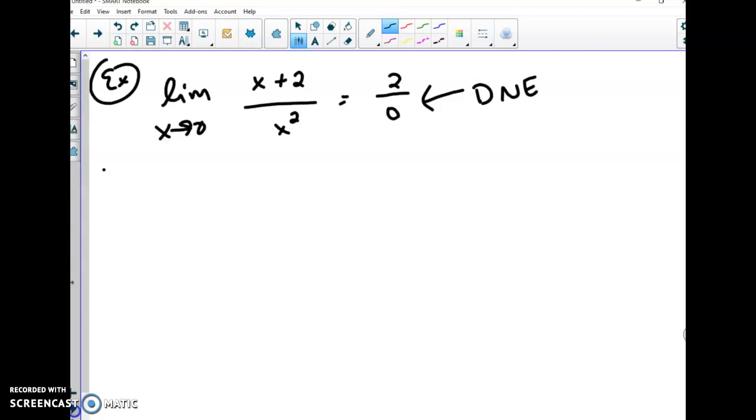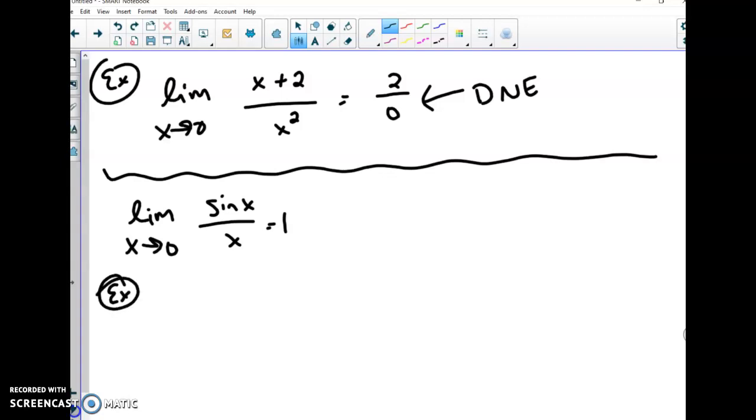There's also another situation where it actually does work out, even though you use substitution, it doesn't look like it. For instance, the limit as x approaches 0 of sine x over x equals 1. Now, it seems kind of goofy because if you sub that in, it should be divided by 0, which says it does not exist. But it actually does. There are just times where you need to look at this on a graph and determine that. But I'm going to tell you right now that the limit as x approaches 0 of sine x over x equals 1.